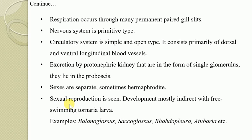Sexual reproduction is seen in this organism, involving the fusion of male and female gametes giving rise to the next progeny. Development is mostly indirect with a free-swimming larva. The larva of hemichordates is referred to as the tornaria larva. Examples of Hemichordata include Balanoglossus, Saccoglossus, Rhabdopleura, and Atubaria.